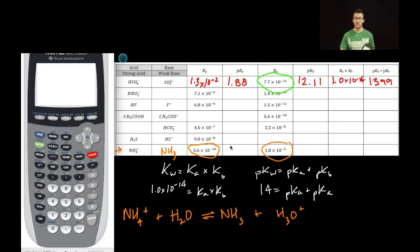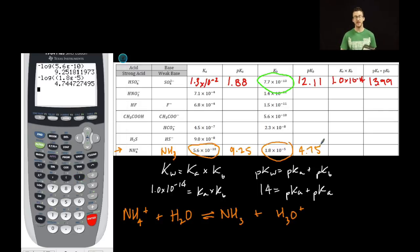Now, in order to determine the pKa from my Ka, I'm simply going to take the negative log of my Ka value, 5.6, second E, negative 10, close parentheses, and I get a pKa of 9.25. Let's do the same thing with my conjugate base. In order to get the pKb, I'm going to take the negative log of my Kb, which is 1.8, second E, negative 5, to get 4.75 as my pKb value.